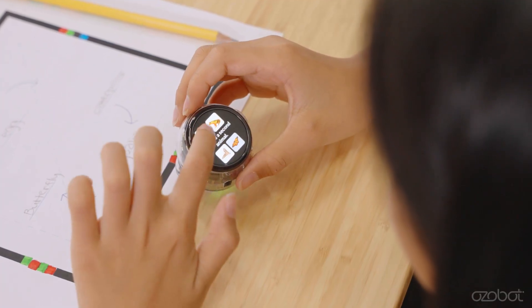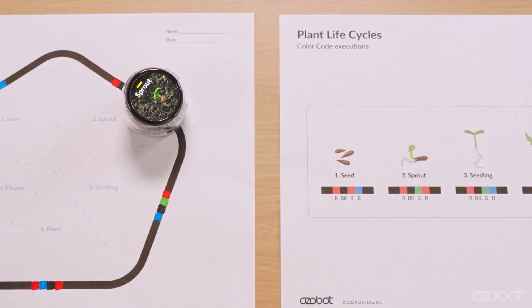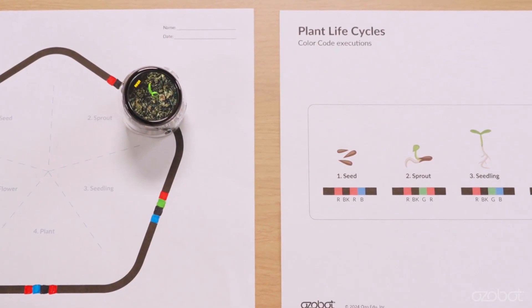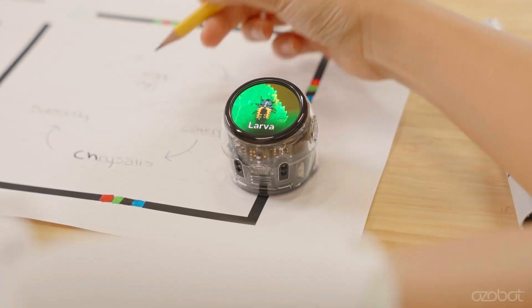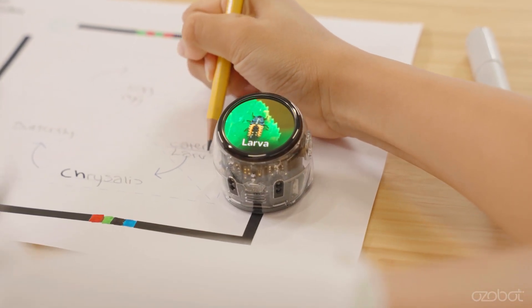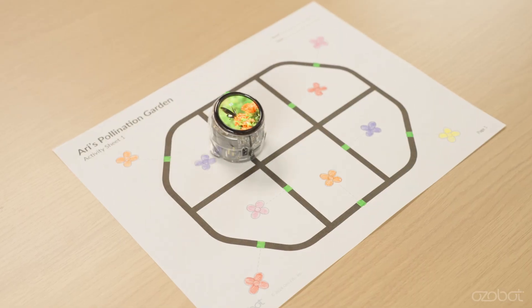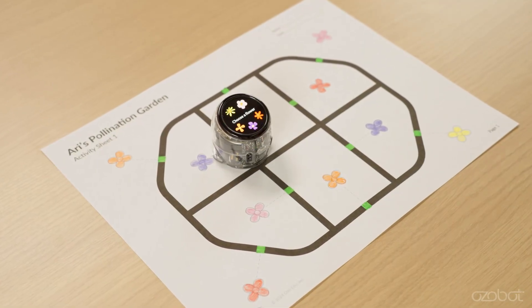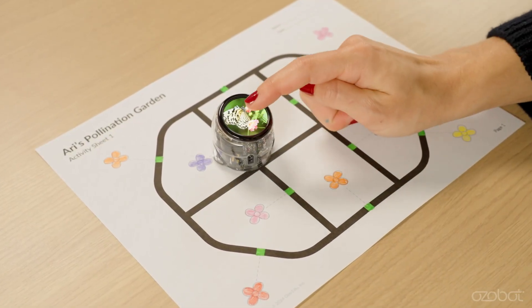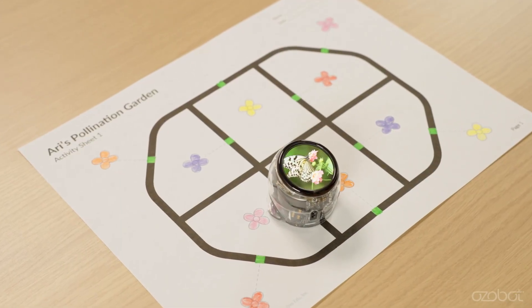One of Ari's stand-out apps is LifeCycles, carefully aligned to NGSS. Students explore plant life cycles, pollinators, animal metamorphosis, and energy transfer in ecosystems, all via an interactive coding experience. With a touch screen, learners deepen and demonstrate their understanding of natural systems, problem-solve, and build critical thinking skills.